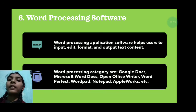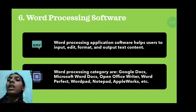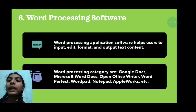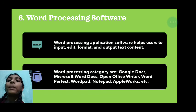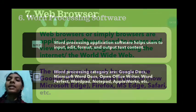Word Processing Software. Word processing application software helps users to input, edit, format, and output text content. Examples in the word processing category are Google Docs, Microsoft Word, OpenOffice Writer, WordPerfect, WordPad, Notepad, AppleWorks, etc.